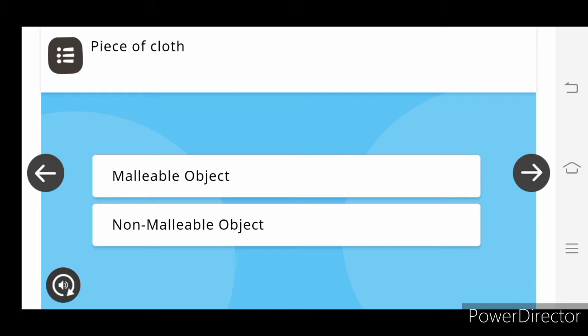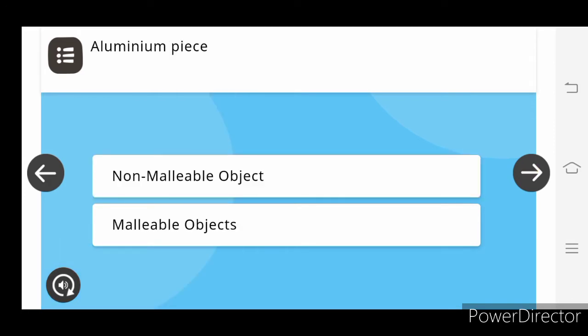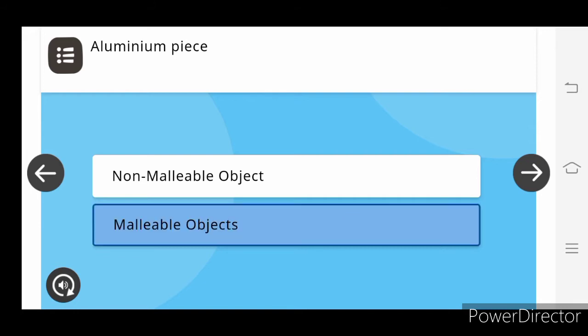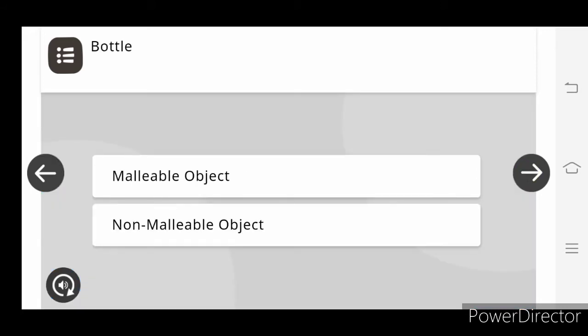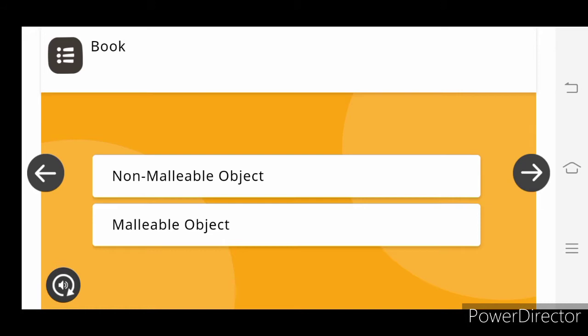Piece of cloth is also a malleable object. Copper wire, malleable object. Aluminum is a malleable object. Bottle, non-malleable object. Book, non-malleable object. Iron key, malleable object.